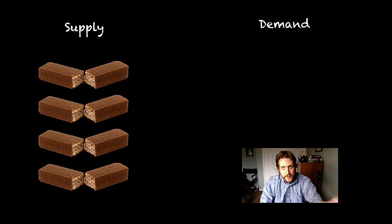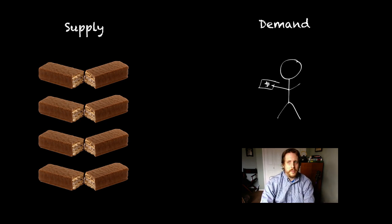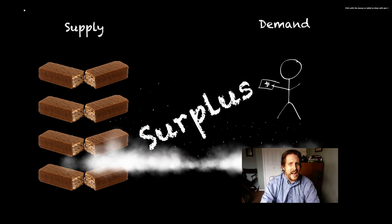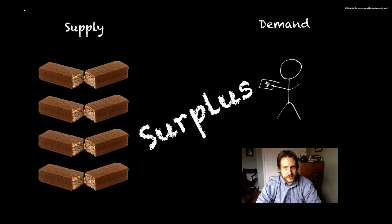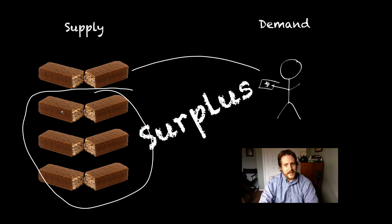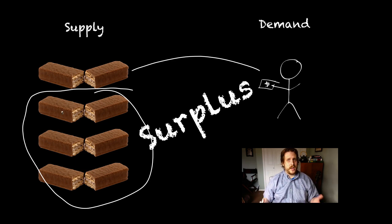I open up my store, and lo and behold, only one person comes in to buy a candy bar for $5 that day. I've got a little bit of a problem now because I have too many candy bars — I have a surplus of candy bars. This candy bar went to that person, but I'm left with these candy bars here, and that's a problem if I have a store and I want to make a lot of money.